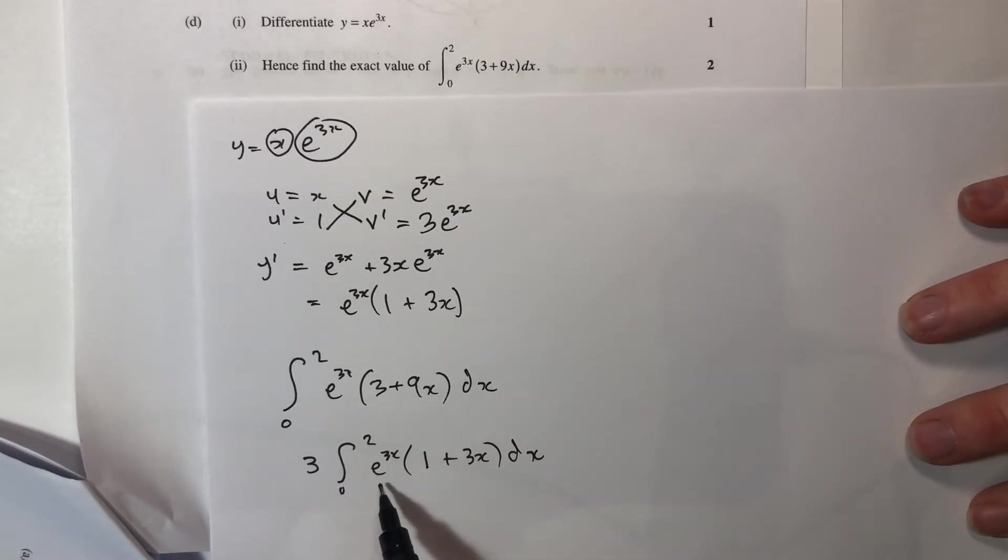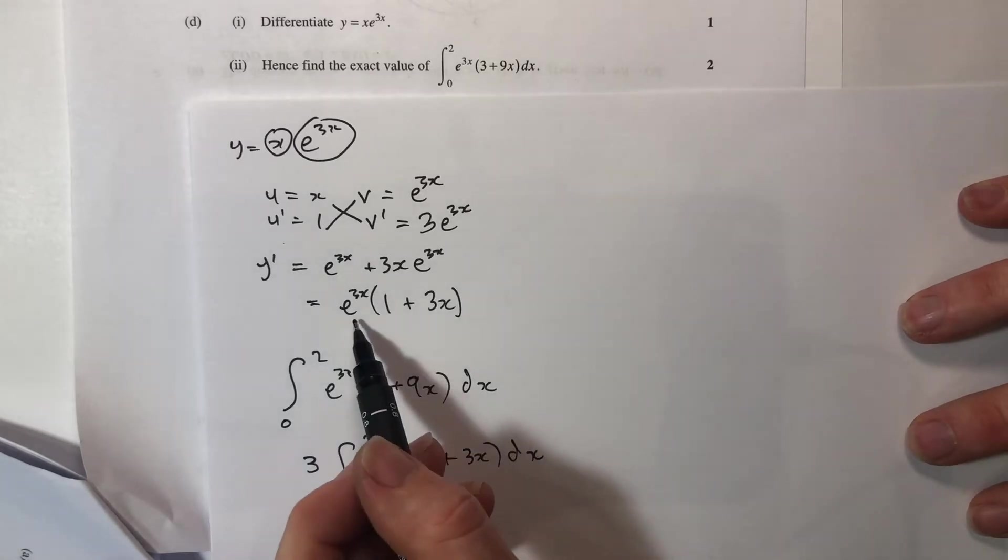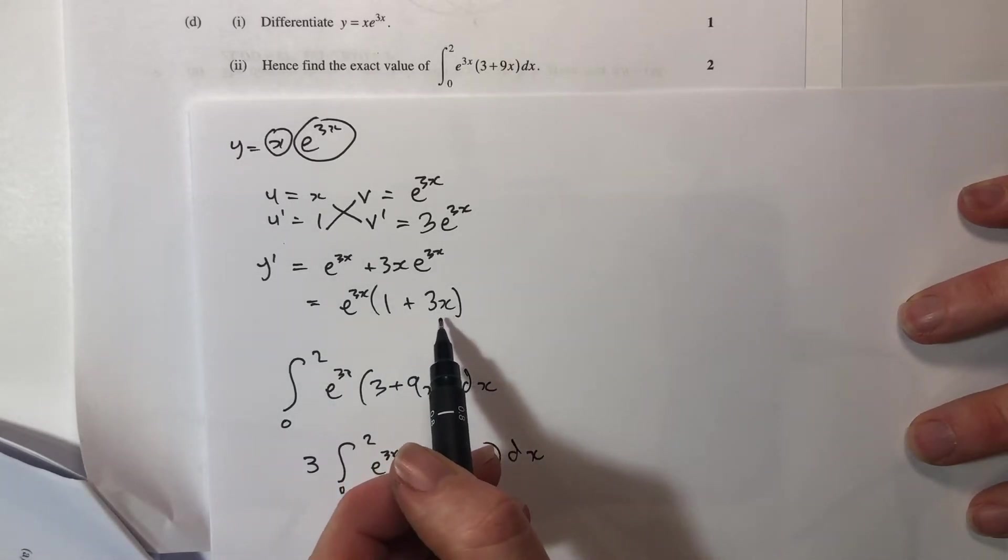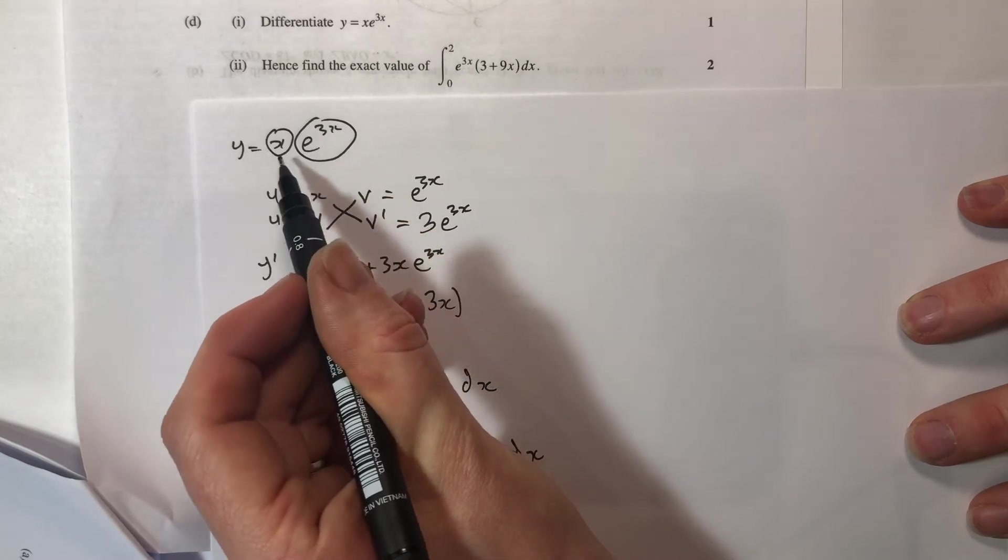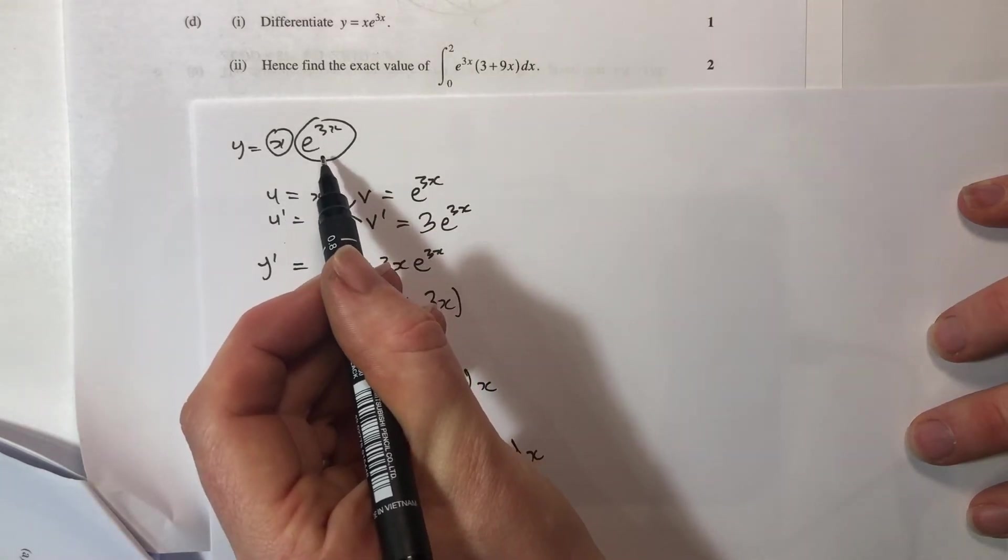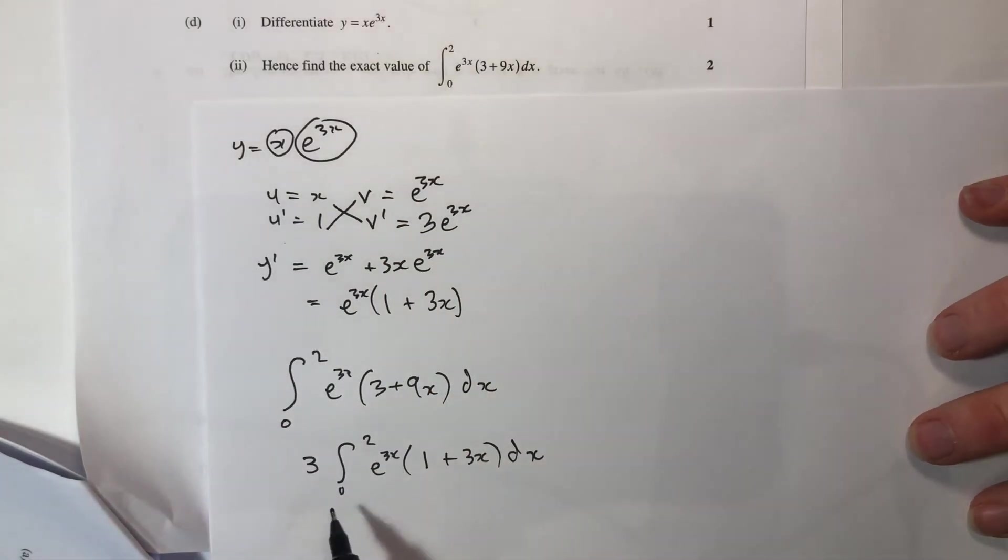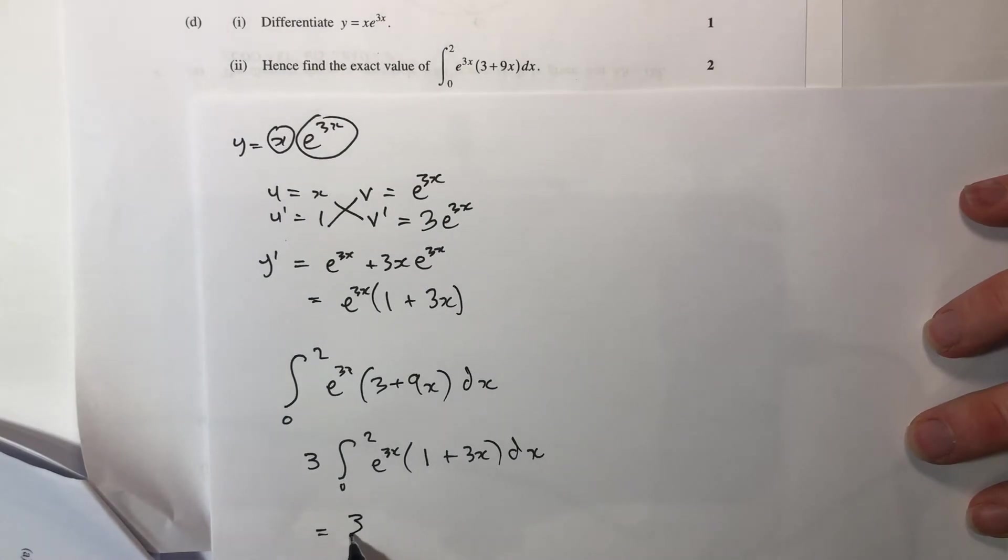Because I know that this is the same as this, and this is the derivative of this, then this function here is the integral of this one. So my integral will be 3 lots of x e to the 3x from 0 to 2.